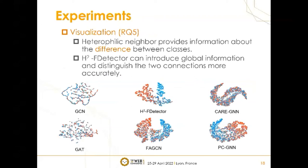To answer Question 5, we visualized the node embeddings of different models using the YelpCHI dataset as an example. According to the results, we find that a heterophilic neighborhood provides information about the difference between classes, which can be used to distance the representation of fraud nodes from that of benign nodes. Our method produces strong intraclass coherence and interclass segregation, which verifies that H2F Detector can introduce global information and distinguish the two connection types more accurately.